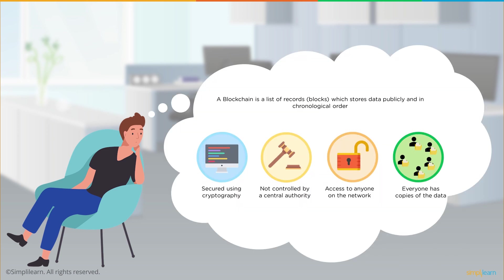We learned about what blockchain is. A blockchain is a list of records which stores data publicly in a chronological order. It applies security using cryptography and is not controlled by a centralized authority. Any information on a blockchain network is accessible to anyone on the network, and as it is a distributed ledger, it's a shared ledger — everyone has a copy of the data.